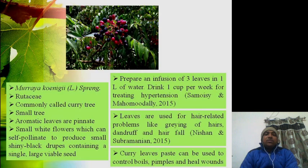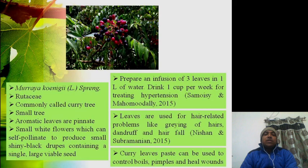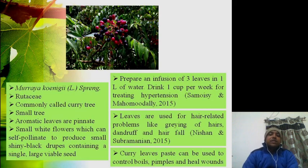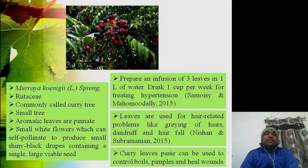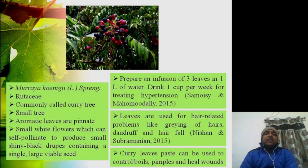I don't have a picture of the flowers; however, the flowers are small and white in color, which can self-pollinate to produce small shiny black drupes or fruits, as you can see in the picture. It contains a single large viable seed, so you can propagate through seeds as well.